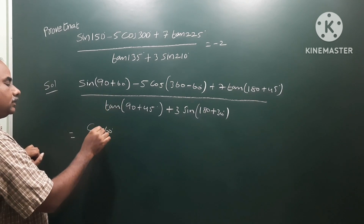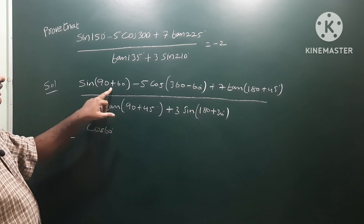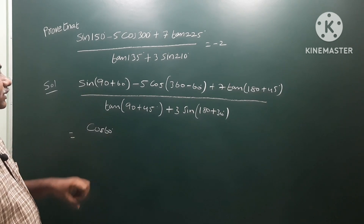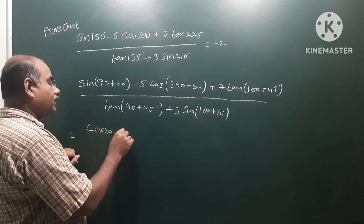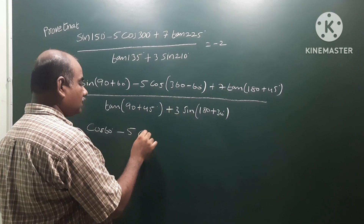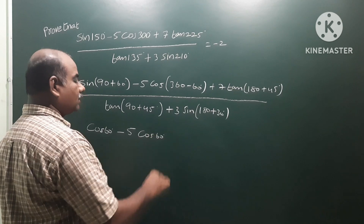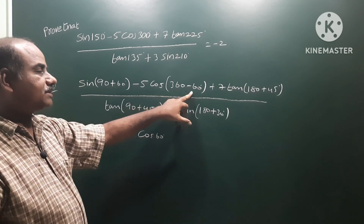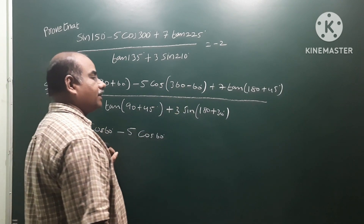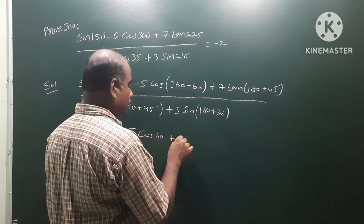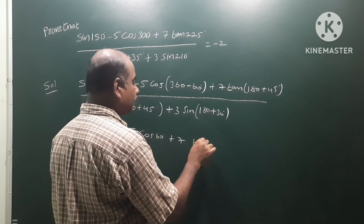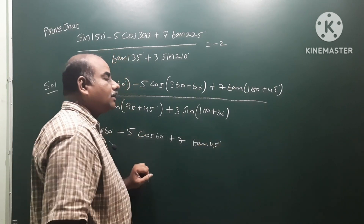sin(90+θ) becomes cosθ — 90+θ is in the second quadrant where sin is positive, so sin(90+60) = cos60. For cos(360-60), it is in the 4th quadrant where cos is positive, so it remains cos60. For tan(180+45), in the third quadrant tan is positive, so it becomes tan45.